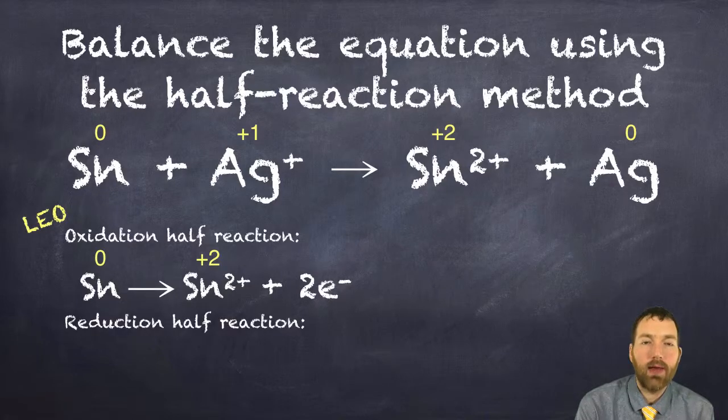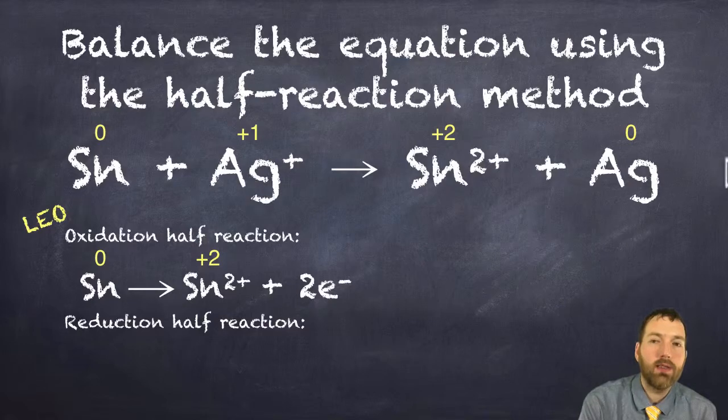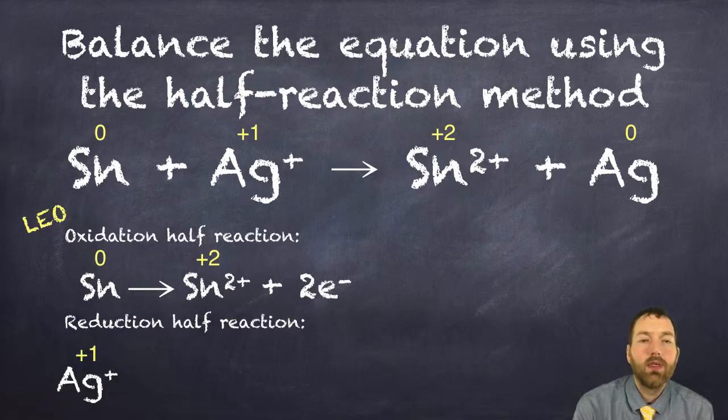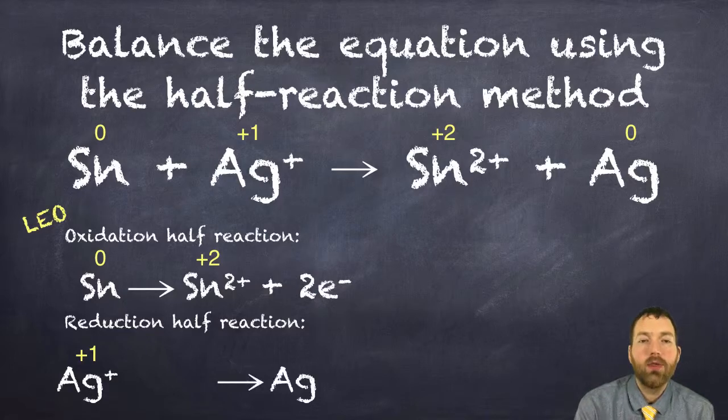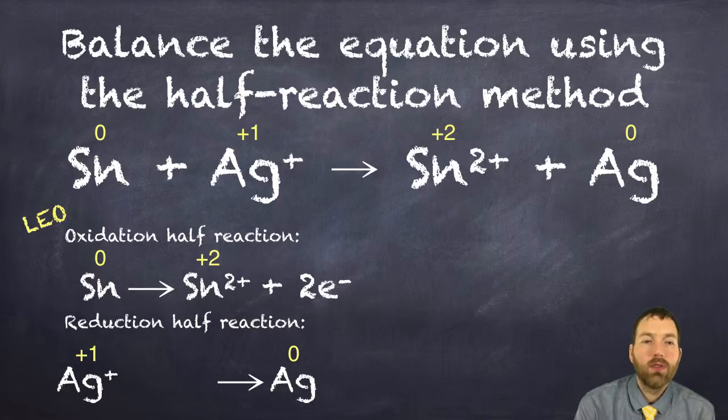Next let's write the reduction half reaction. In the reduction half reaction, silver ions turned into silver atoms. So silver ions with their one plus oxidation number turned into silver atoms with their zero oxidation number.